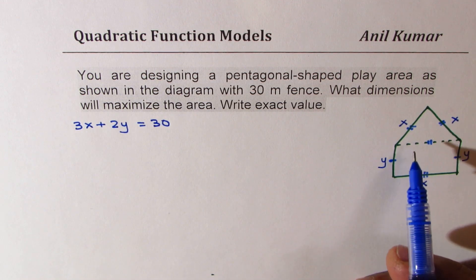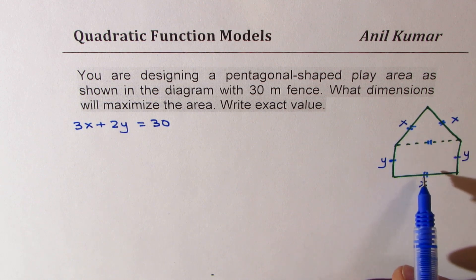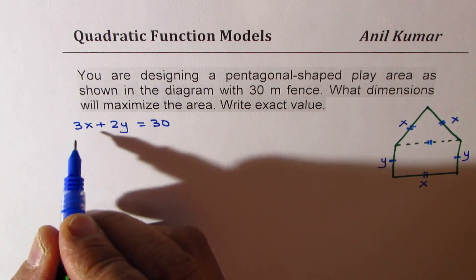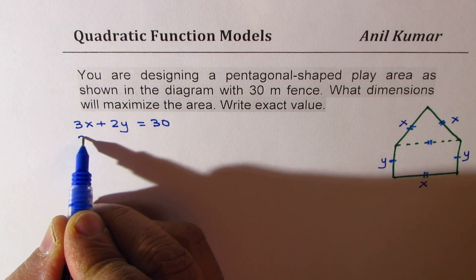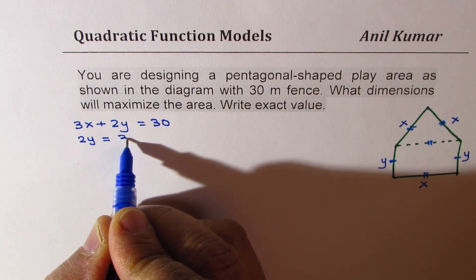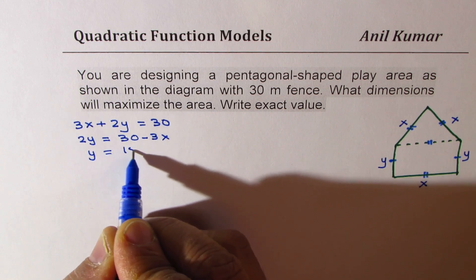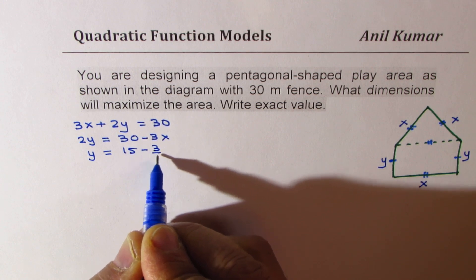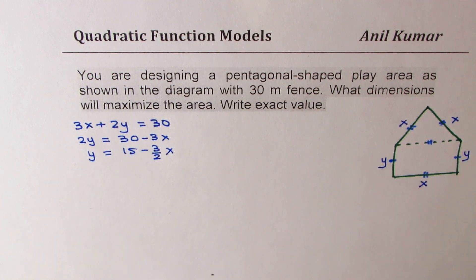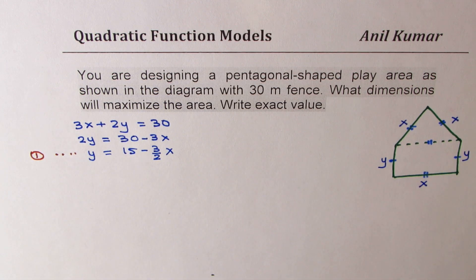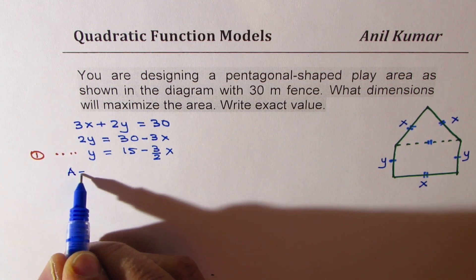Now we need to maximize area. Since area is in terms of x and y, it's a good idea to isolate one variable. Isolating y: 2y = 30 − 3x, so y = 15 − (3/2)x. We'll call this equation number one.